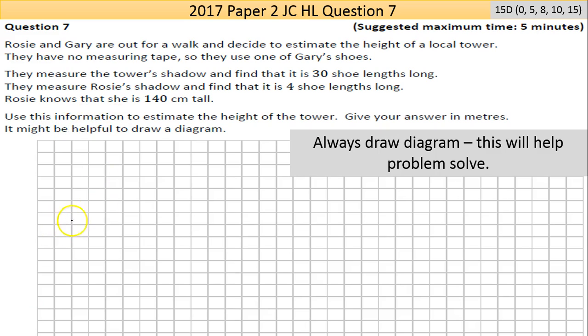Now if you have one person standing - let's say this is the girl Rosie - she's casting a shadow, and it's 4 shoe lengths. She's 140 centimeters tall. That gives us a triangle from her head to the base of the shadow.